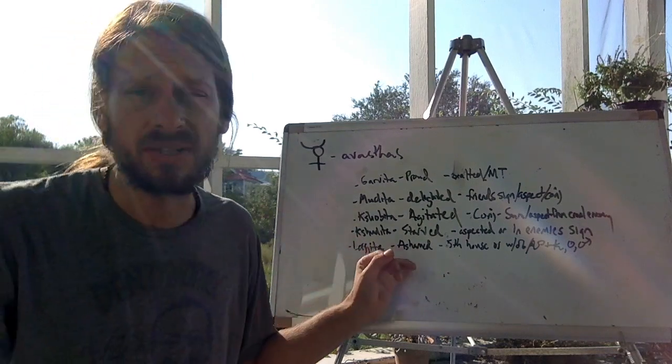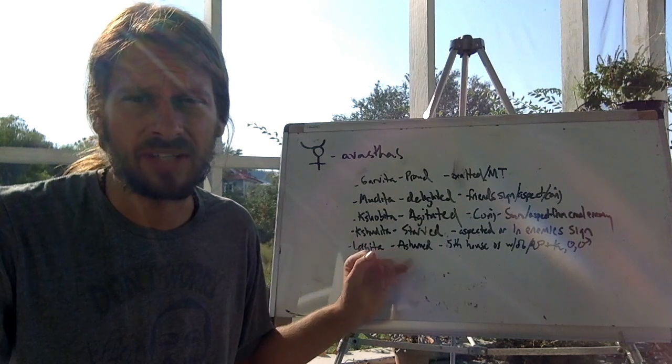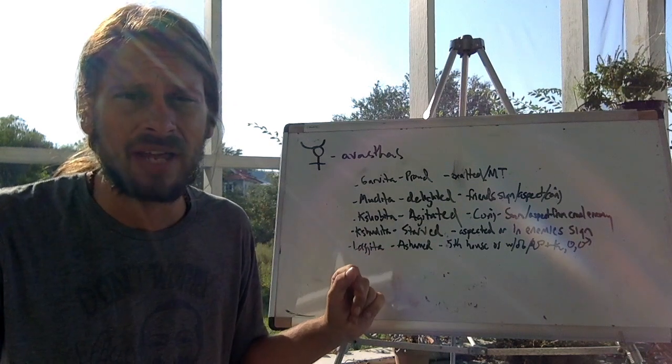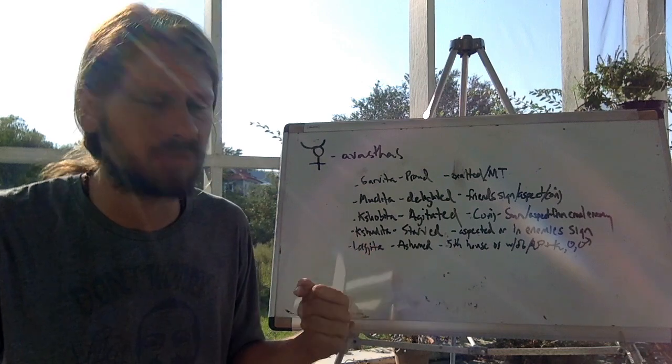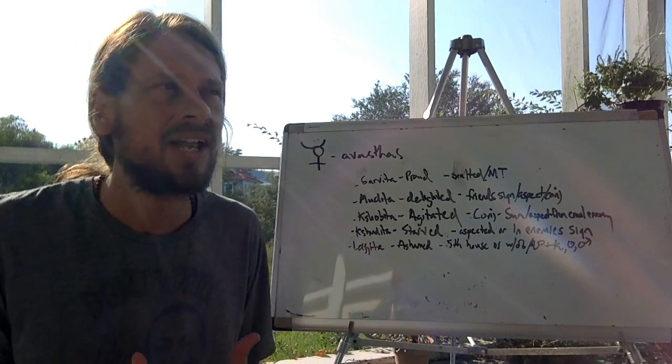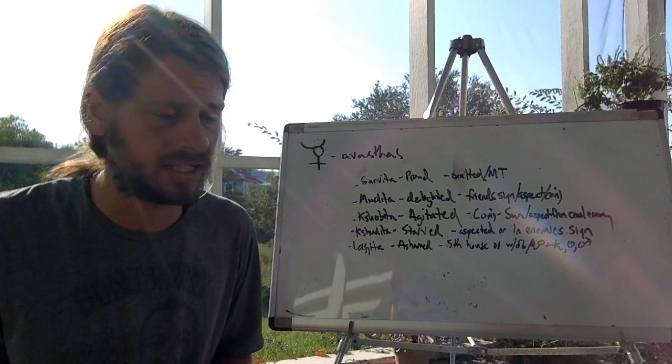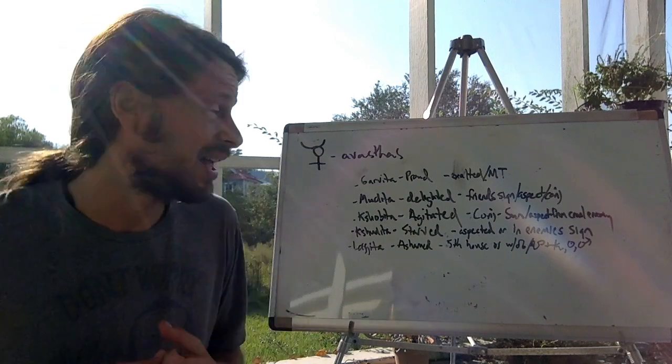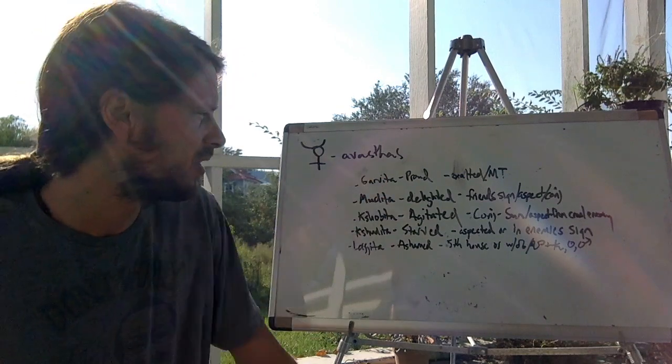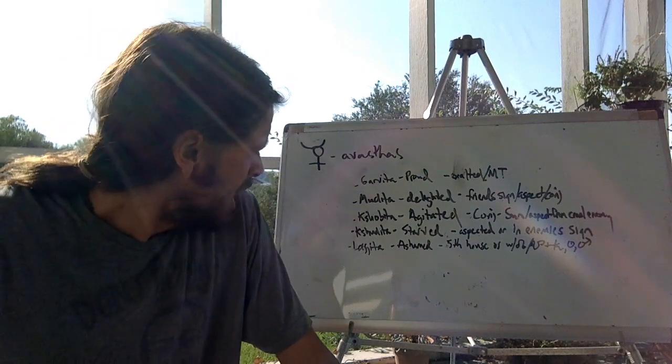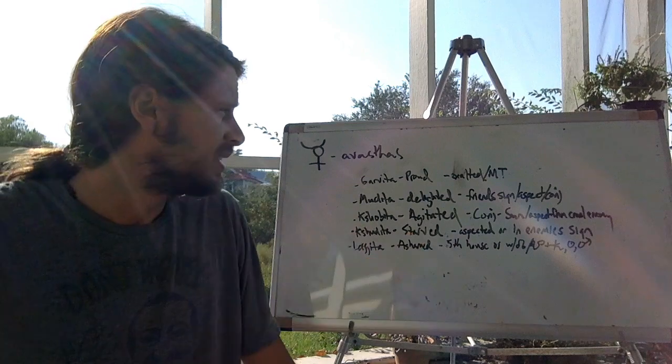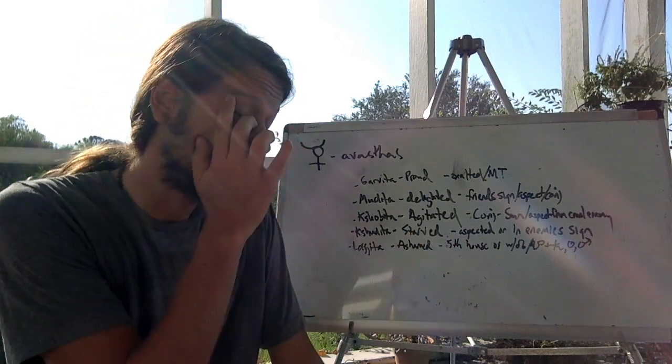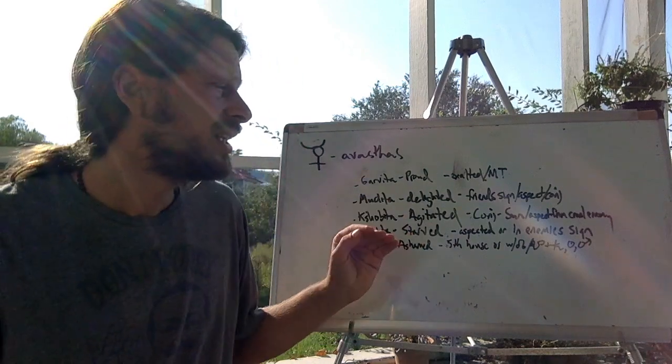And this is actually very interesting. This is what made me want to do this avashta, this Mercury avashta series, because I was thinking about it for a while, and was talking with a friend of mine who had a really cool example of their Mercury being ashamed. I mean, not cool, but really just interesting and fascinating. So I can't wait to share that example with you guys, amongst many other examples.